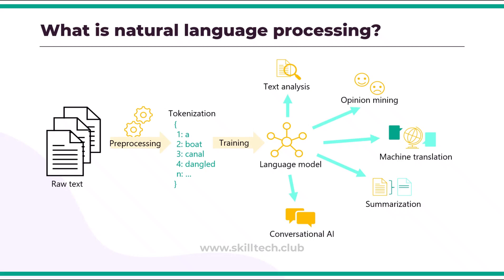So what is natural language processing? NLP is the area of AI that deals with making sense of written and spoken language. Typically an NLP solution starts with a large volume of raw text, which is then pre-processed to prepare it for modeling. Many of these approaches extensively used statistical modeling techniques that relied on counting the frequency of words in text to derive meaning.